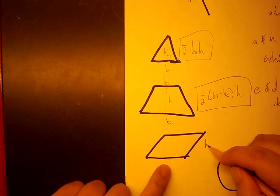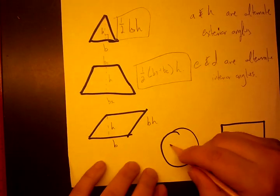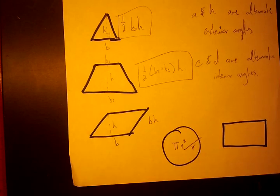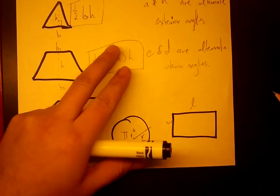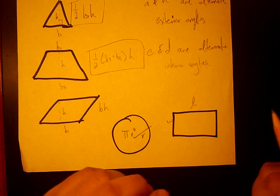Parallelogram, which is simply base times height. Where this is the base, this is the height. For a circle, it's pi r squared. Where this is the radius, of course. For a rectangle, it's simply length times width. And for the special case of rectangle, which is a square, it's going to be side squared. Because length and width are the exact same. So that is our major areas.